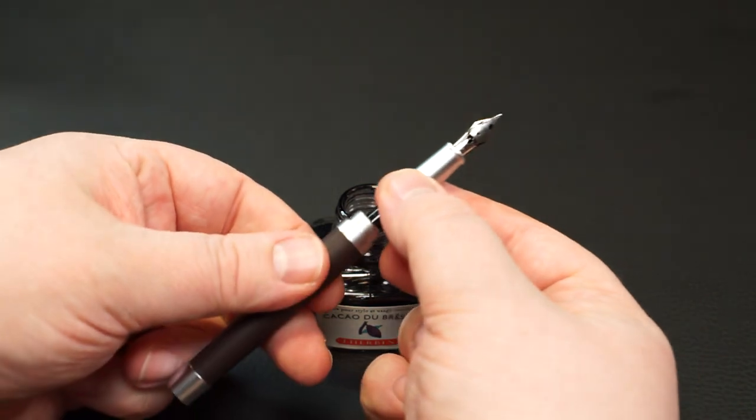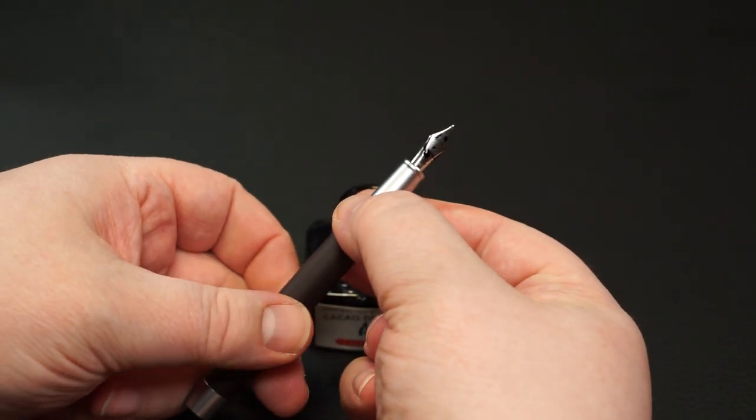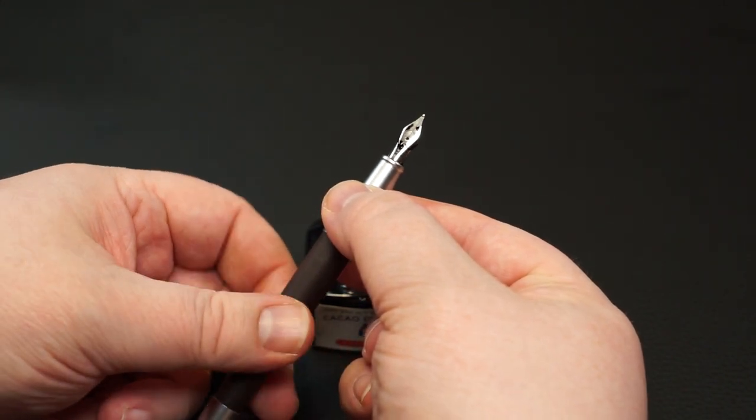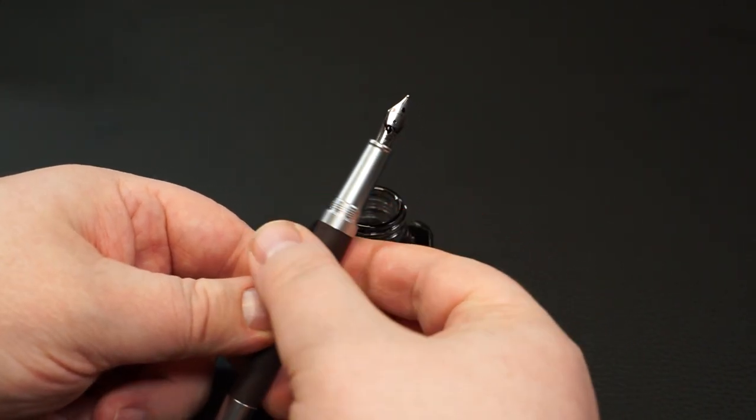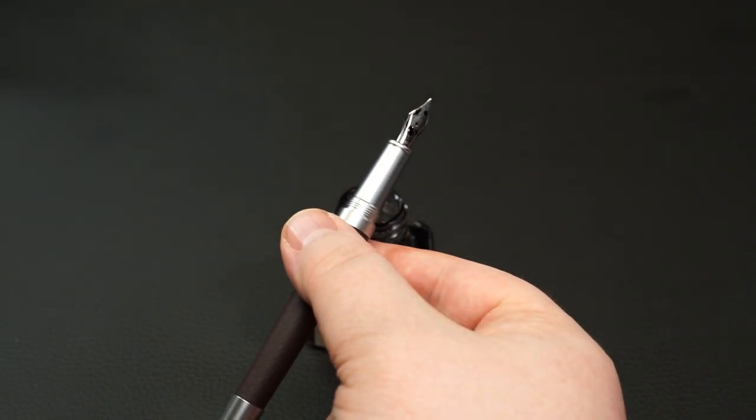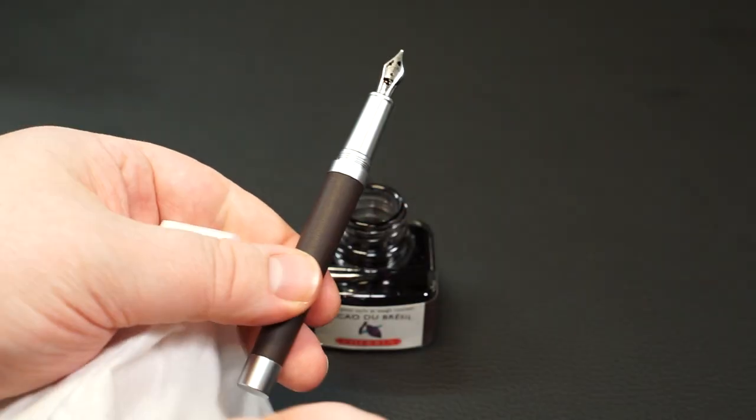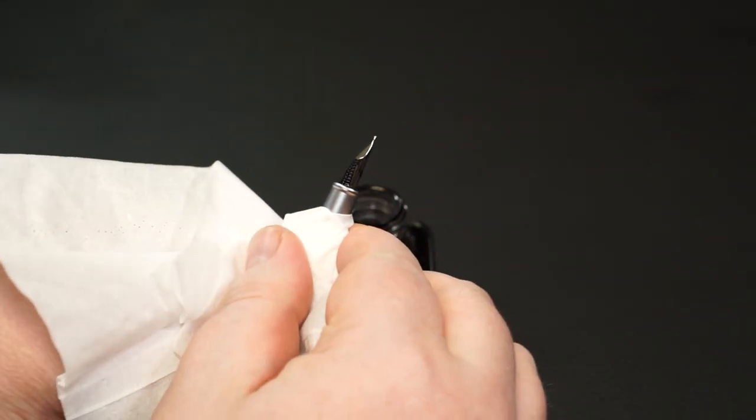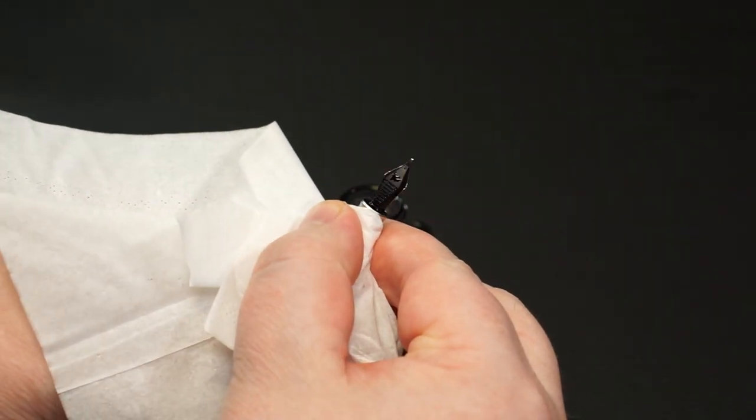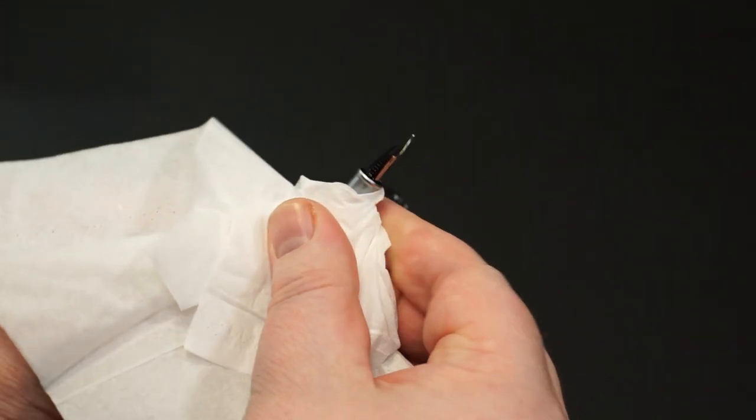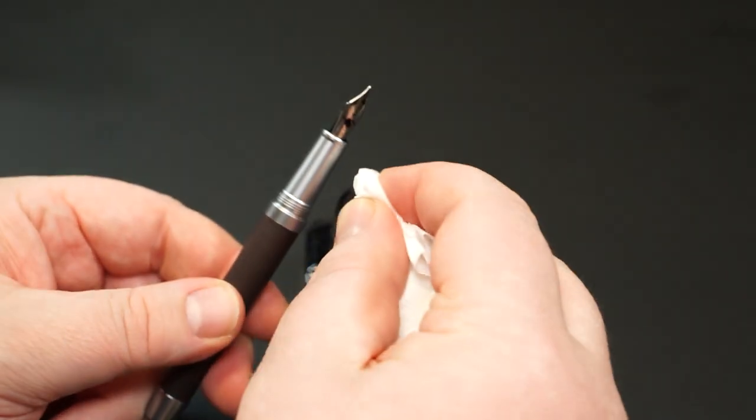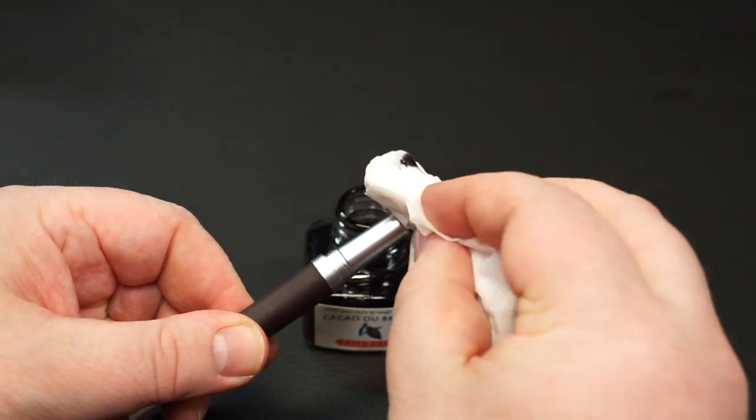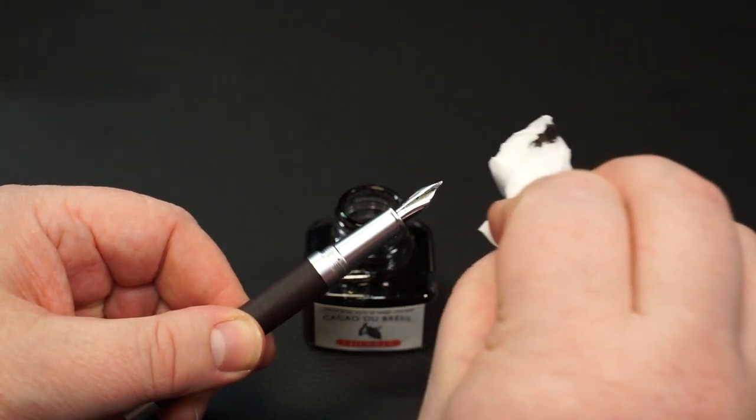Then put on the barrel, clean the grip section once again, and wipe the nib. The fountain pen with filled converter is ready.